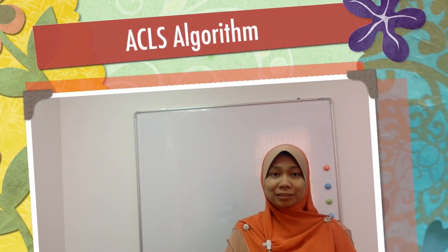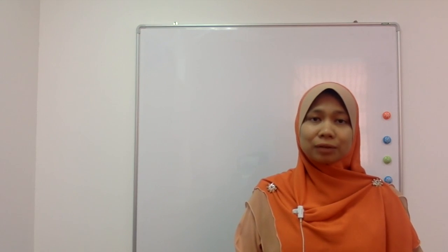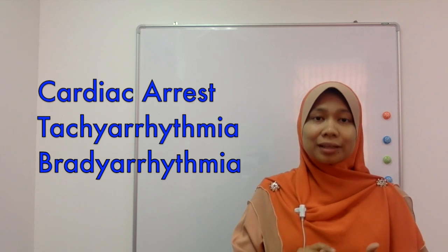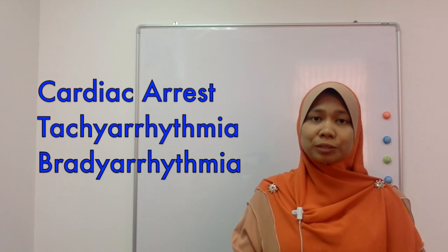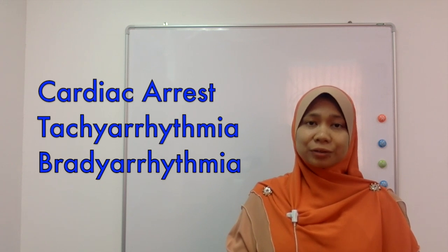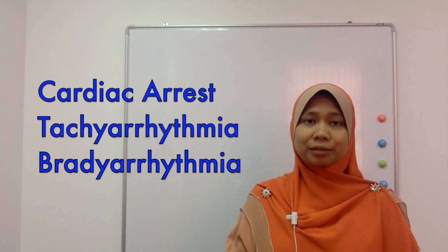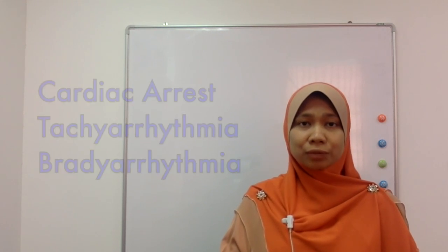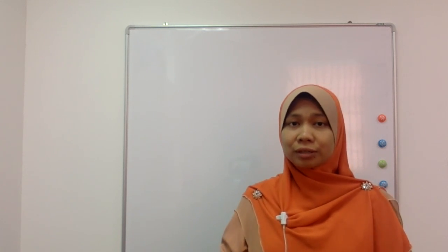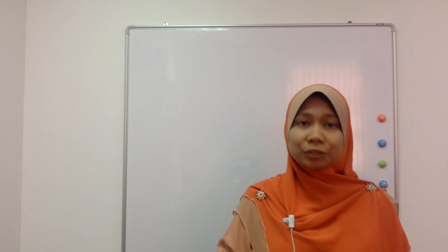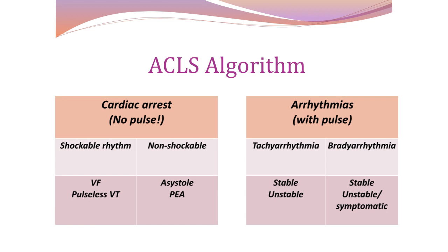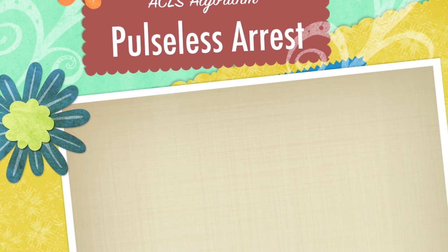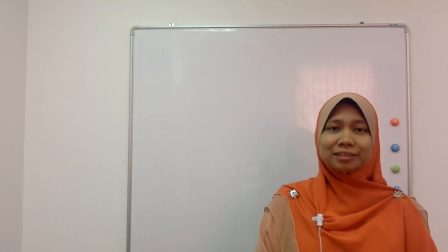Today we're going to learn about the ACLS algorithm. Under this topic we'll cover cardiac arrest and arrhythmia. In cardiac arrest there is no pulse — when we feel for the carotid artery there is no pulse. Under arrhythmia we have tachyarrhythmia and bradyarrhythmia. In arrhythmia the patient has a pulse, but if the patient does not have a pulse and the rhythm shows arrhythmia, we still treat the patient following the cardiac arrest algorithm.